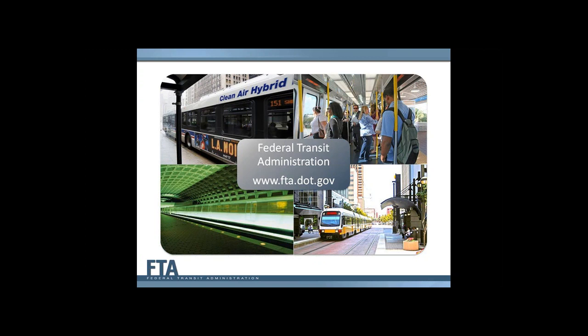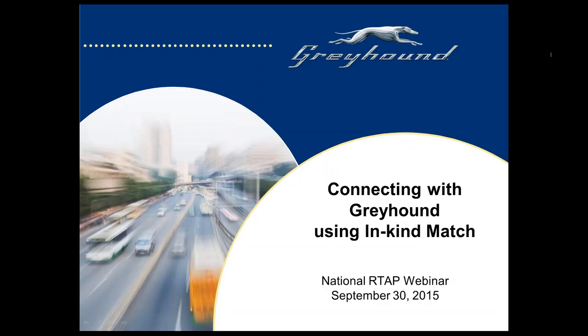This intercity match opportunity has really allowed service to maintain its ability to serve rural customers across Washington, Oregon, the Midwest, and other parts of the country. Whether it's Jefferson Lines, Greyhound, or any of the other regional carriers participating, it has really helped maintain the network. Stephanie is totally knowledgeable, so get your questions together and we'll look forward to your comments at the end.